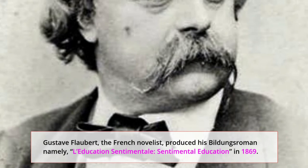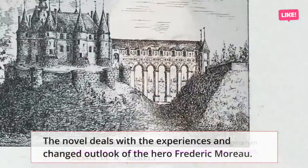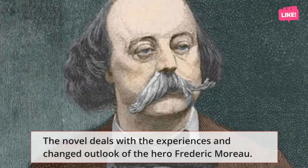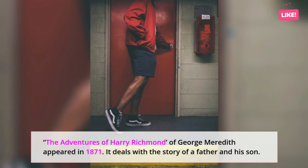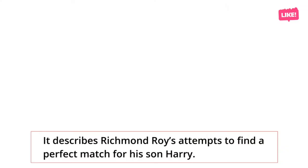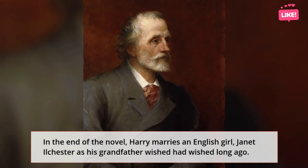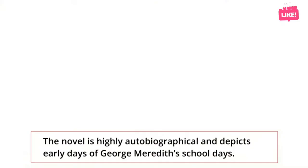Gustave Flaubert, the French novelist, produced his Bildungsroman namely L'Éducation Sentimentale (Sentimental Education) in 1869. The novel deals with the experiences and changed outlook of the hero Frédéric Moreau. The Adventures of Harry Richmond by George Meredith appeared in 1871 and deals with the story of a father and his son, describing Richmond Roy's attempts to find a perfect match for his son Harry. In the end of the novel, Harry marries an English girl Janet Ilchester, as his grandfather had wished long ago.